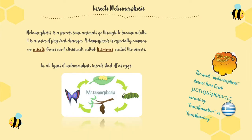But first of all, what is metamorphosis? Metamorphosis is a process some animals go through to become adults. It is a series of physical changes. Metamorphosis is especially common in insects. Genes and chemicals called hormones control the process. In all types of metamorphosis, insects start off as eggs. Did you know? The word metamorphosis derives from Greek, meaning transformation or transforming.